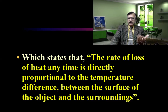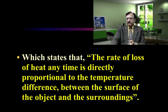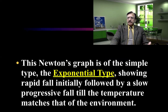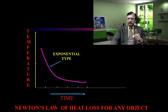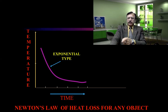The human body does not cool in accordance with Newton's law of cooling. Newton's law states that the rate of heat loss at any time is directly proportional to the temperature difference between the surface of the object and the surroundings. For a metallic object, this gives an exponential graph — a rapid fall initially, followed by a slow progressive fall until the temperature matches the environment.